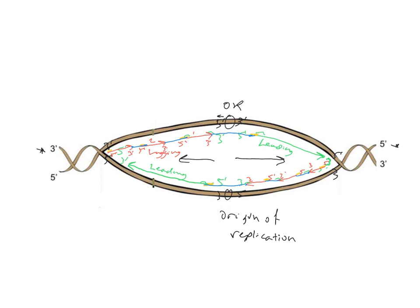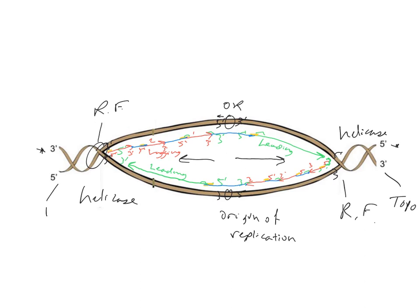Other enzymes to remember: at the two replication forks (one going in each direction), helicase is working to unzip the DNA double helix so the two strands can act as templates. Ahead of helicase, topoisomerase is relaxing the supercoiled DNA double helix — it works ahead of helicase to unsupercoil the DNA. We also have single-stranded DNA binding proteins that bind to the single-stranded DNA right behind helicase to prevent the two strands from re-zipping, allowing the template to actually be read at the replication forks.